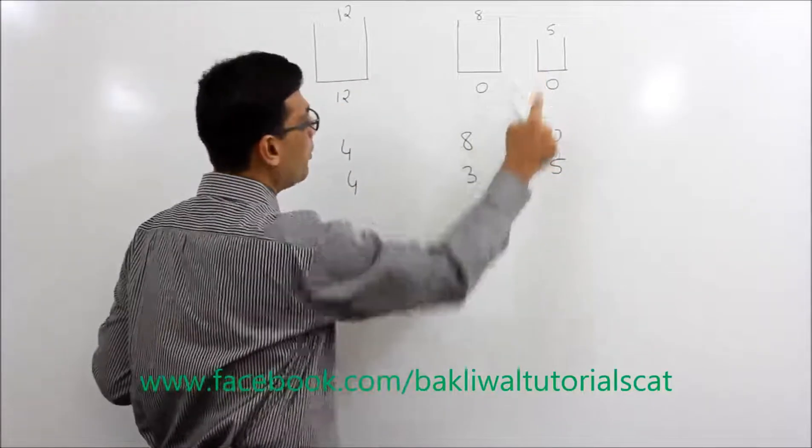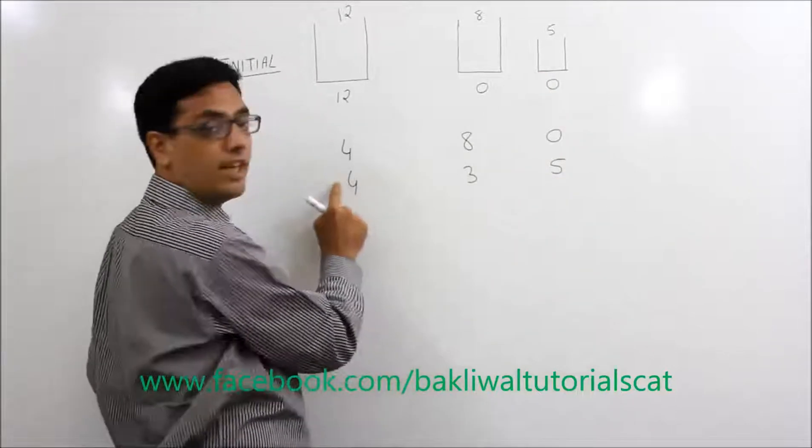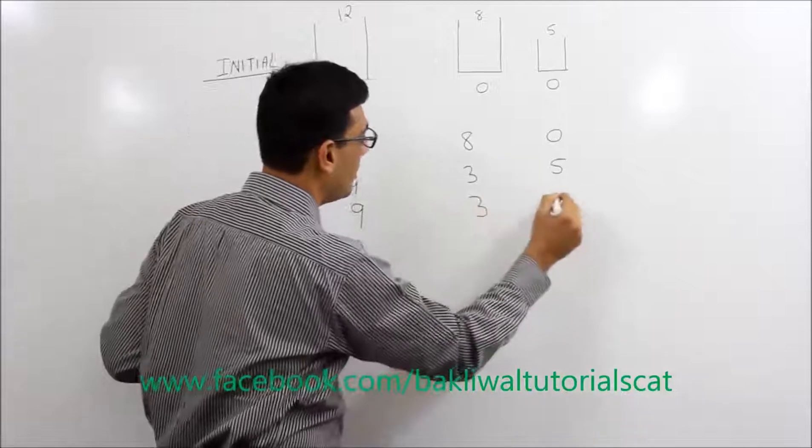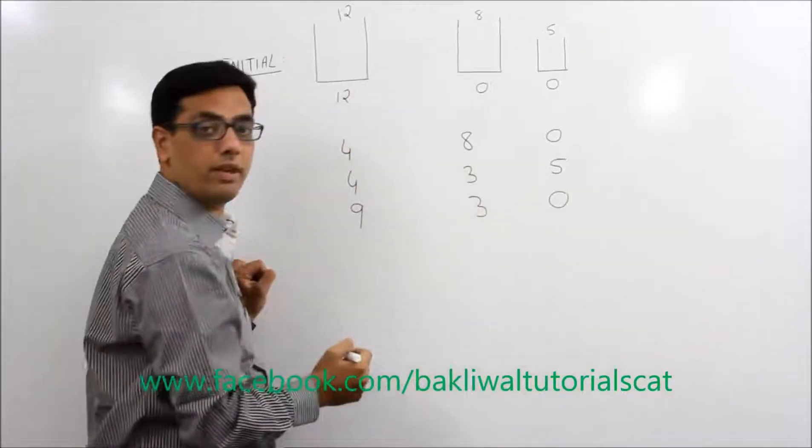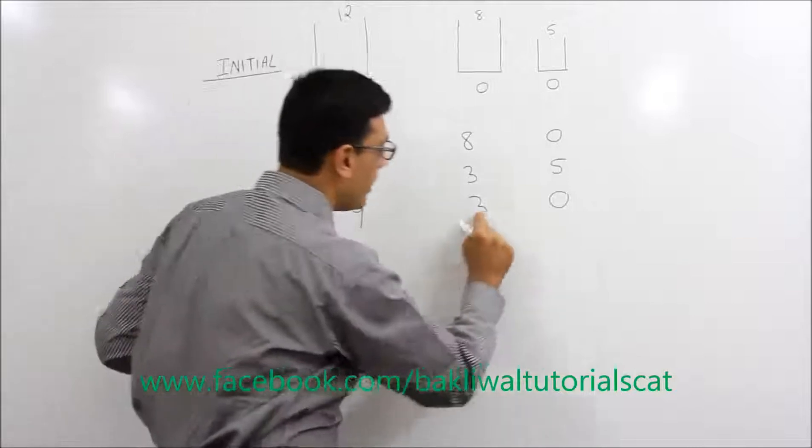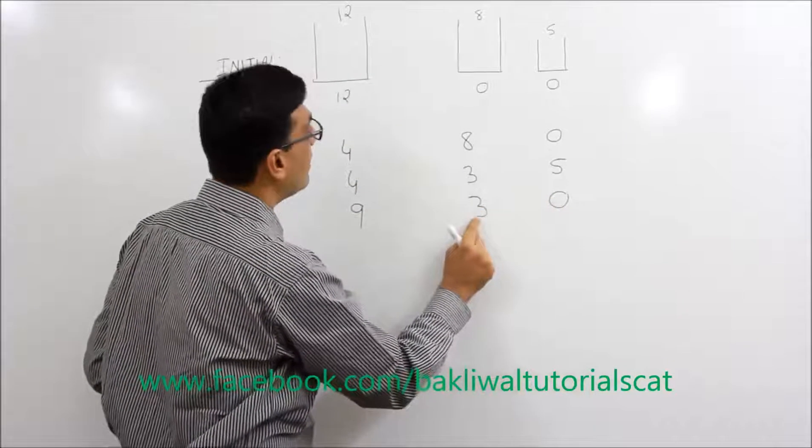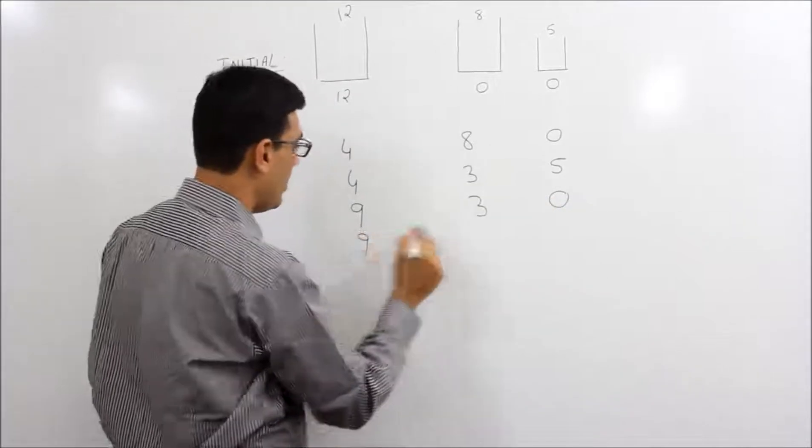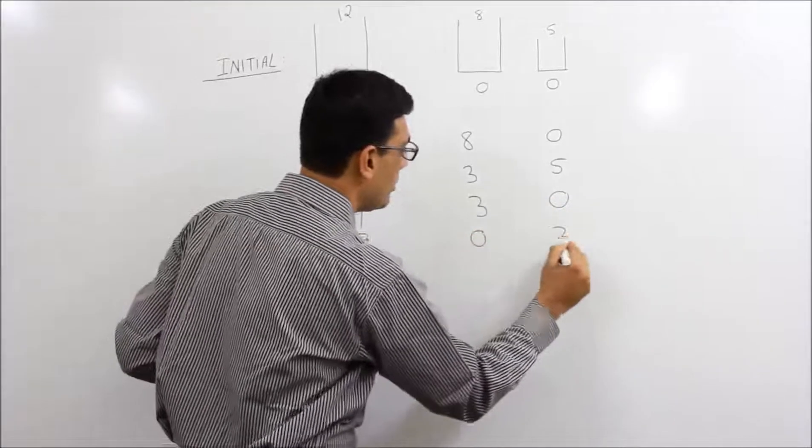Now we put this 5 litre again in the first jar. So it becomes 9, 3 and 0. This is step number 3. Now we put this 3 in the third, this 3 litre in the second jar. We just emptied here. So it becomes 9, this is 0, this is 3.